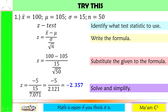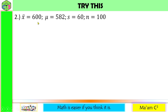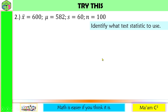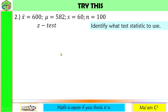Let's have another one. Sample mean is equal to 600, population mean is 582, sample standard deviation is 60, and the sample size is 100. Step 1: identify what test statistic to use. We do not have the population standard deviation — we have sample standard deviation instead. But notice that our sample size is greater than 30, so we are still going to use Z-test.